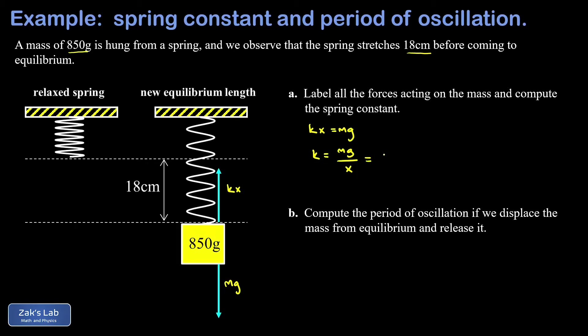Now we can just plug the numbers in, make sure you convert that mass to kilograms, 0.850. We'll use 9.8 for g. And then x, the displacement from the equilibrium length of the spring, is 0.18. And to three significant digits, we get a spring constant of 46.3 newtons per meter.